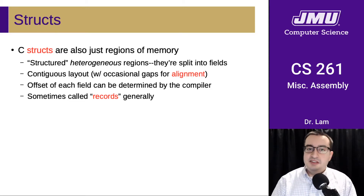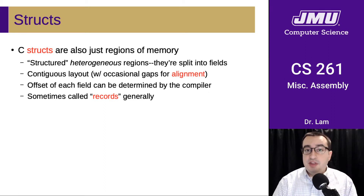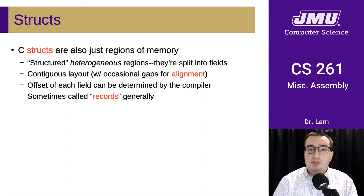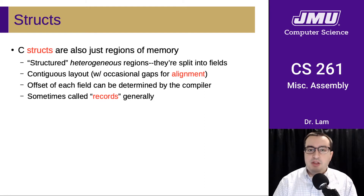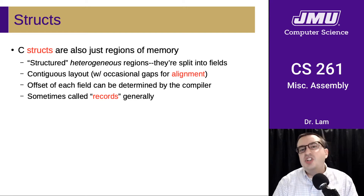Like arrays, structs are also just regions of memory. These are structured, heterogeneous regions — whereas arrays always had all elements of the same type (they were homogeneous), structs are heterogeneous in that they can have different kinds of fields. It is still a contiguous layout, so the entire struct is laid out together in memory, with occasional gaps for alignment as we've seen already. The offset of each of these fields can be determined by the compiler. Sometimes we call these records — it's a more general term.